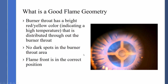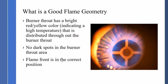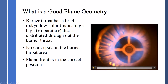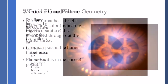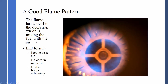It has a bright yellow color, indicating a high temperature that is distributed throughout the burner throat. There should be no dark spots in the burner throat. The flame front is in the correct position. We are looking for a bright yellow color throughout the burner area. The flame has a swirl to the operation, which is mixing the fuel with the air. The end result of this process is low excess air, no carbon monoxide, and higher boiler efficiency.